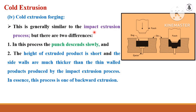Cold extrusion forging is generally similar to the impact extrusion process but there are two differences: the punch descends slowly, and the height of the extruded product is very short with side walls much thicker than the thin-walled products produced by impact extrusion. In cold extrusion forging the sides are thicker. This process is also a backward extrusion process because the force and the extruded product are in opposite directions.